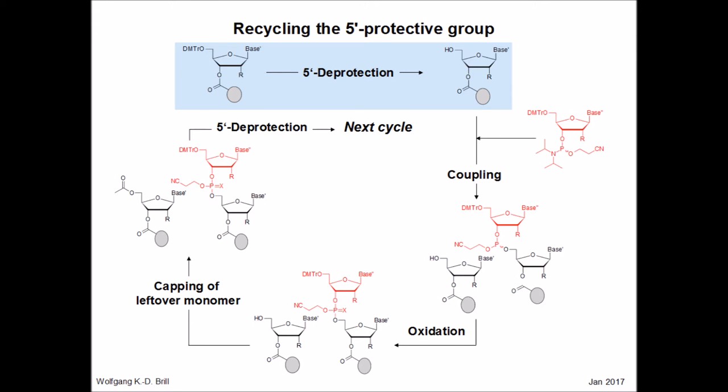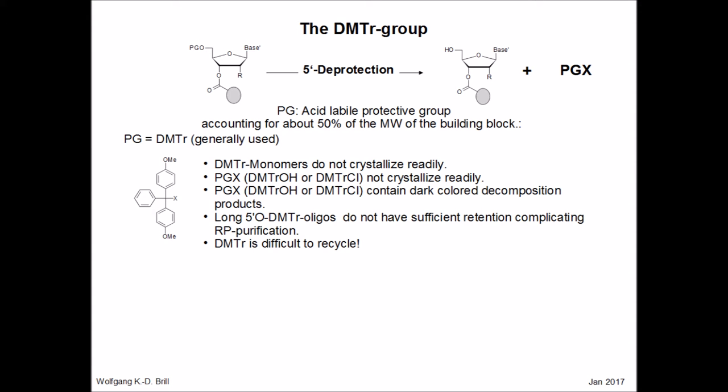Another issue is the recycling of chlorinated solvents used in the detritylation reaction, and the recovery of the trityl group itself, which accounts for about half of the molecular weight of the nucleotide building blocks. When we attempt to recover the dimethoxytrityl group — the most commonly used 5' protecting group in oligonucleotide synthesis — we may encounter several problems. Dimethoxytritylated monomers do not crystallize readily, but form amorphous solids.